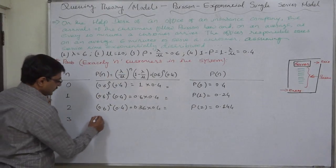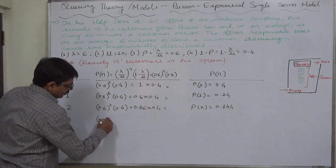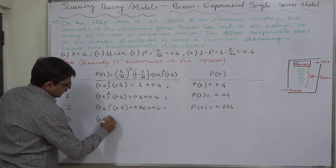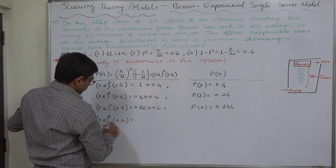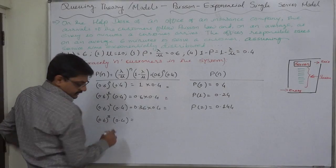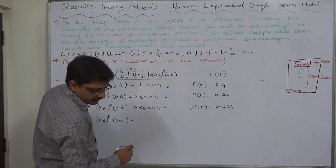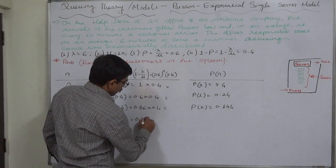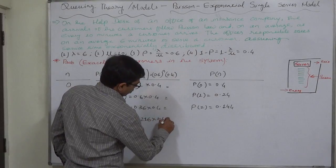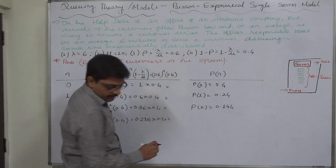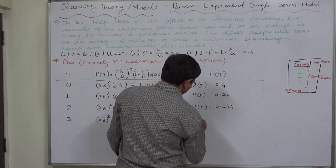Suppose n takes the value 3. The probability of exactly three customers in the system is the utilization rate raised to 3, multiplied by the idle rate. 0.6 raised to 3 gives 0.216, and 0.216 into 0.4 gives 0.0864.